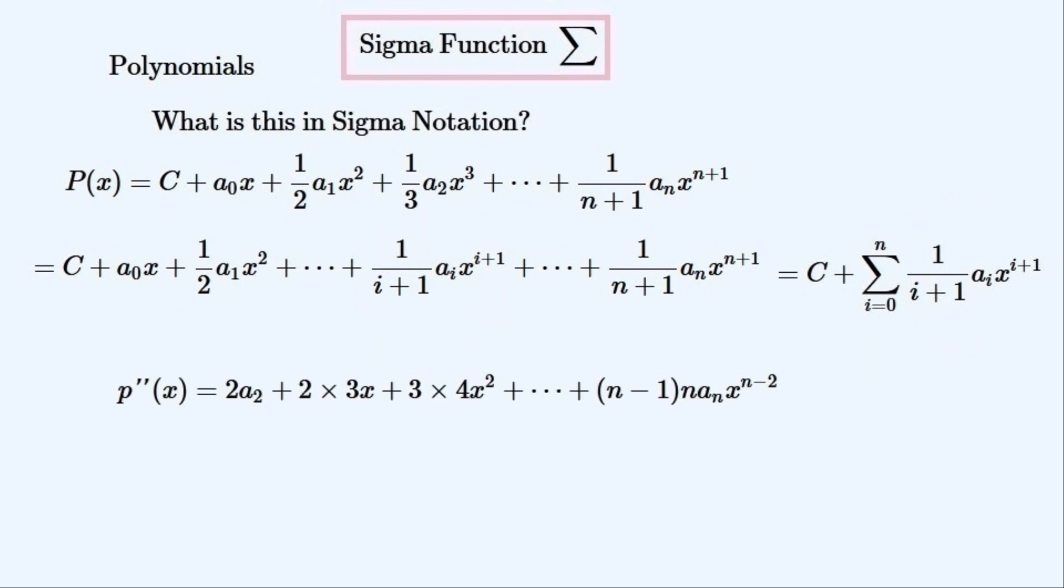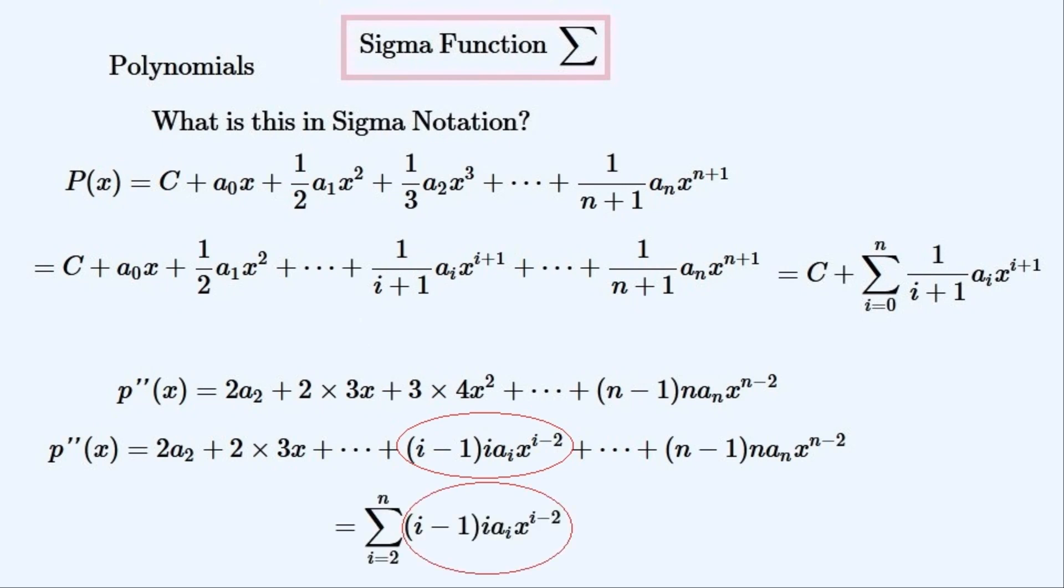This is the second derivative of the polynomial that we started with. We'll get the ith term in this series. And we'll pack it up into this sigma notation using the same bounds as a has.